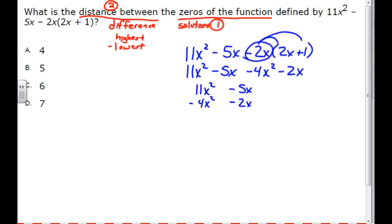There's nothing else to deal with. So when we combine these like terms, we have 11 minus 4x², which is 7x². And then we have minus 5x and minus 2x, and minus 5 and minus 2 is a minus 7x.